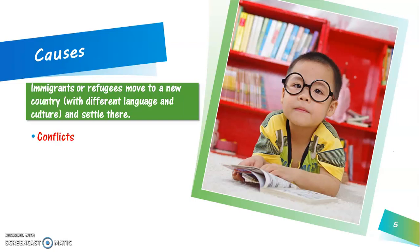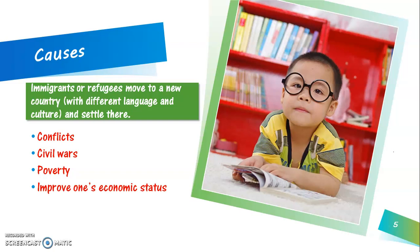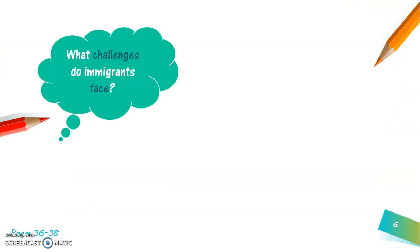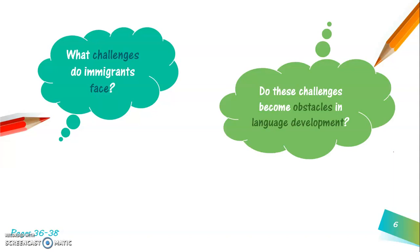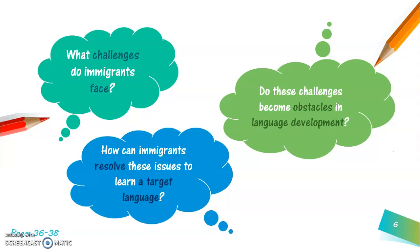Normally, the main reason could be conflicts — whether personal, social or political civil wars, like the cases of what's happening nowadays in the Middle East. Poverty, or the desire to improve one's economic status — that is, to find a job or better opportunities. To join their family, maybe a wife joining her husband or vice versa. And finally, personal reasons. Pause the video and think about the challenges these immigrants face, how those challenges relate to language learning, and what the solutions might be.